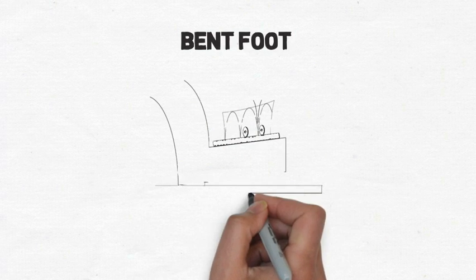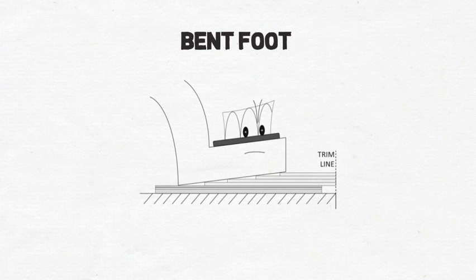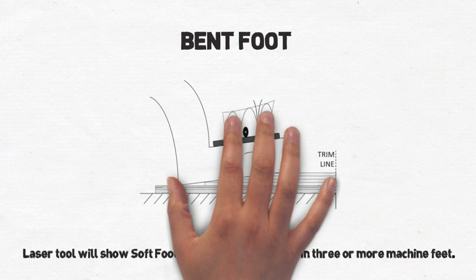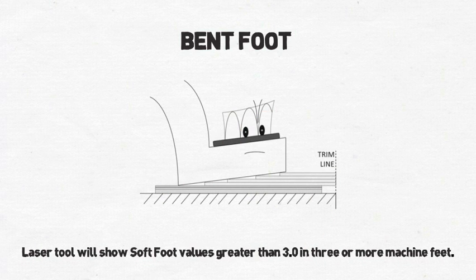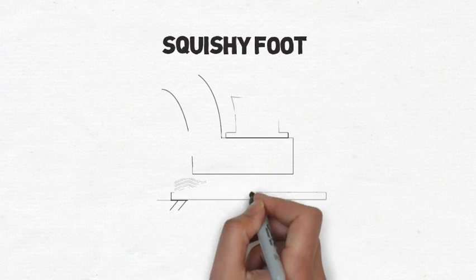The laser readings will show three or more feet out of tolerance. Squishy soft foot is present when there is a cushion effect under the foot due to dirt, rust, oil, bent shims, or too many shims.